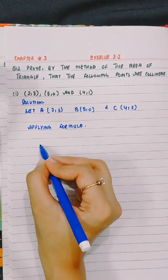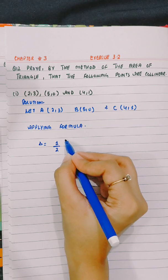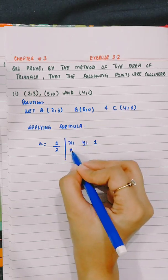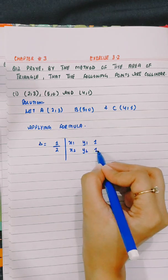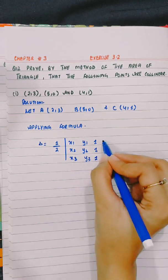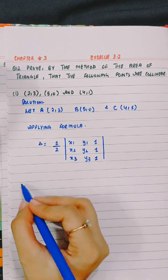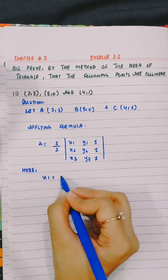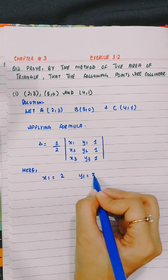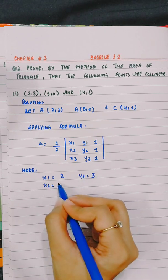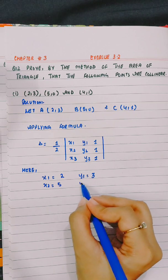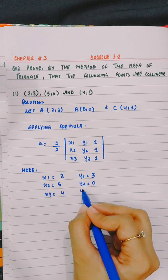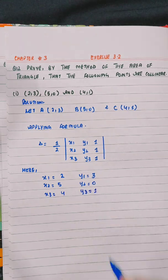Applying formula, area equals half of x1, y1, 1, x2, y2, 1, x3, y3, 1. Here x1 is 2, y1 is 3, x2 is 5, y2 is 0, x3 is 4, and y3 is 1.